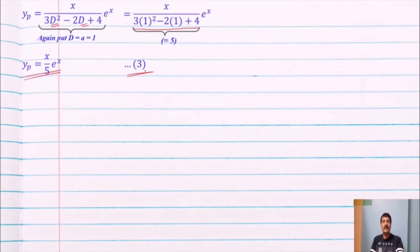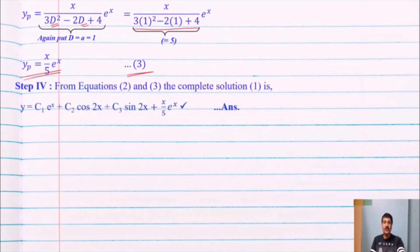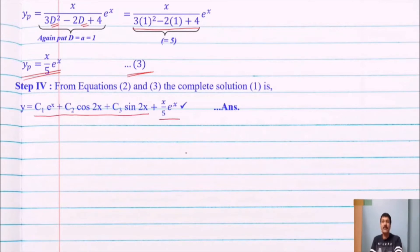We now have yc and yp. The complete solution from equations 2 and 3 is: y = c₁e^x + c₂cos(2x) + c₃sin(2x) + (x/5)e^x.